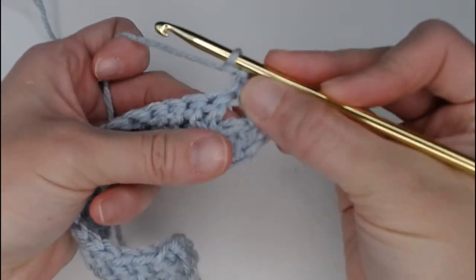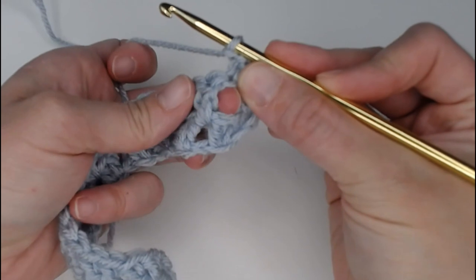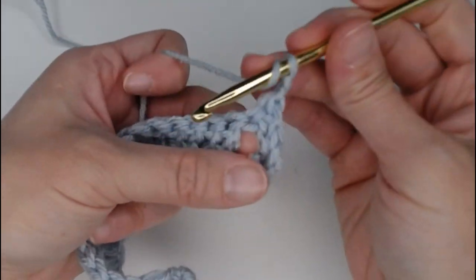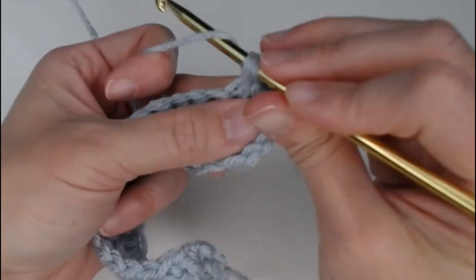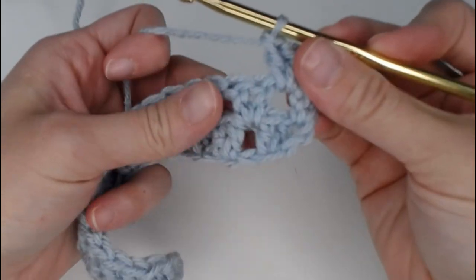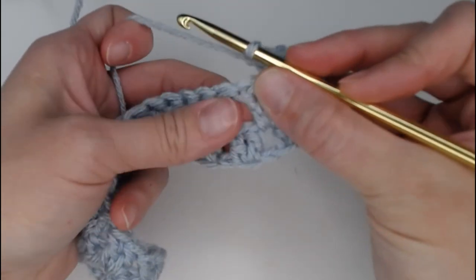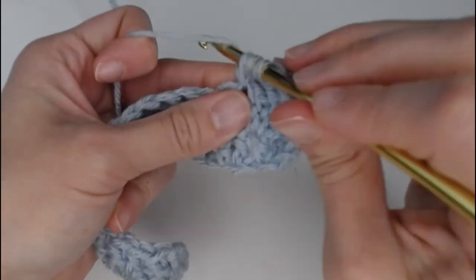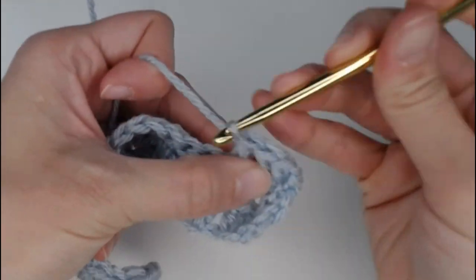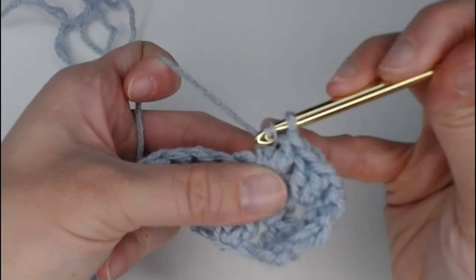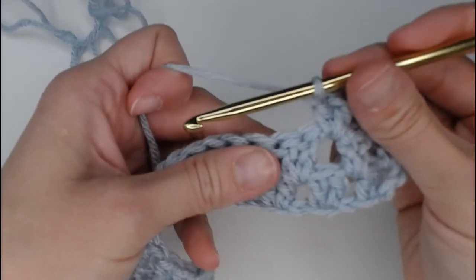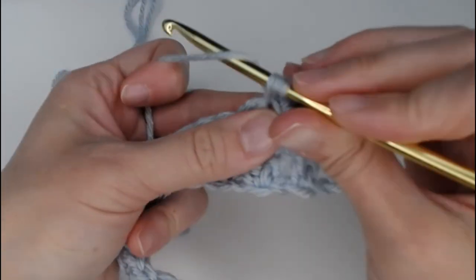So again, we are skipping those first 2 double crochets and looking for that gap space right there. And that is where we are putting our 2 double crochets. Okay, skipping those 2, looking for the gap. Alright, continue all the way across row 3.